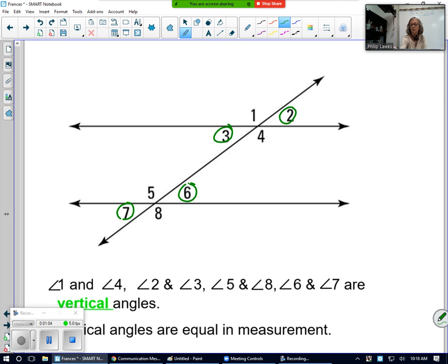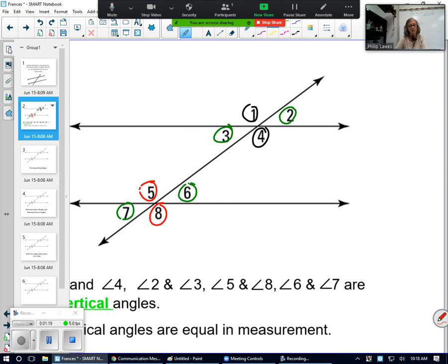Let's change colors so we can keep track. 1 and 4, and 5 and 8. Those pairs are vertical angles and remember vertical angles are equal in measurement. Let's go to the next slide.